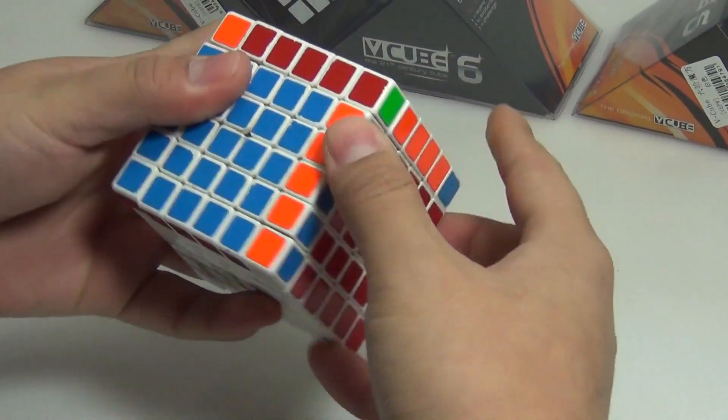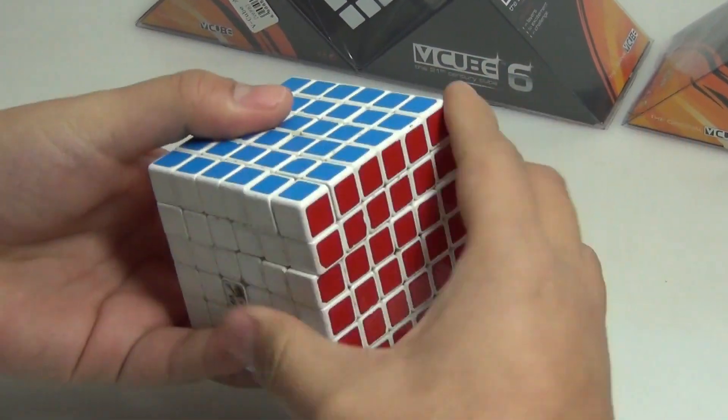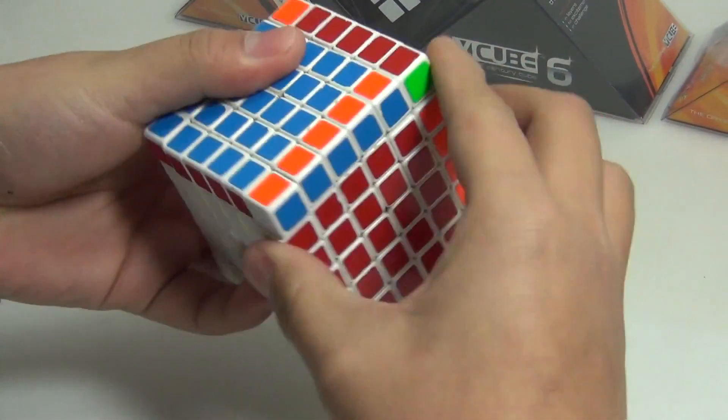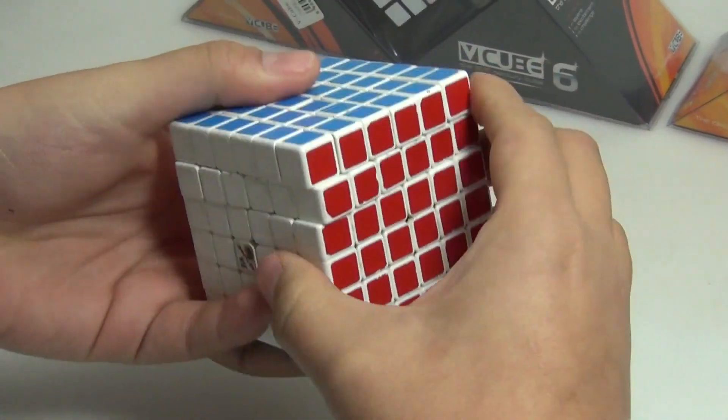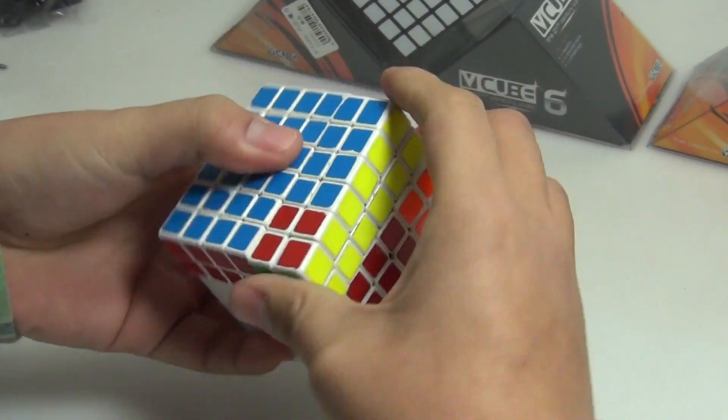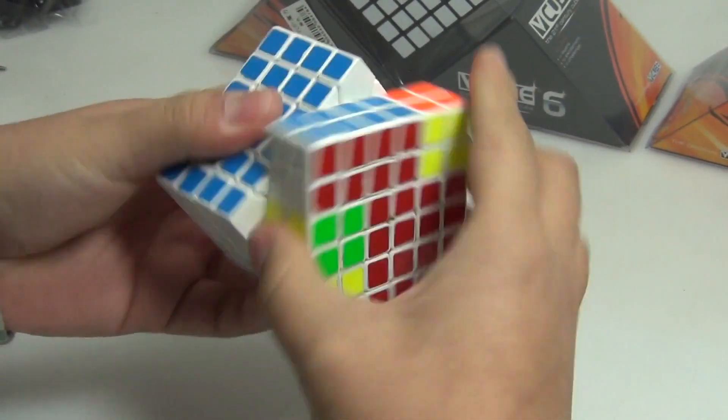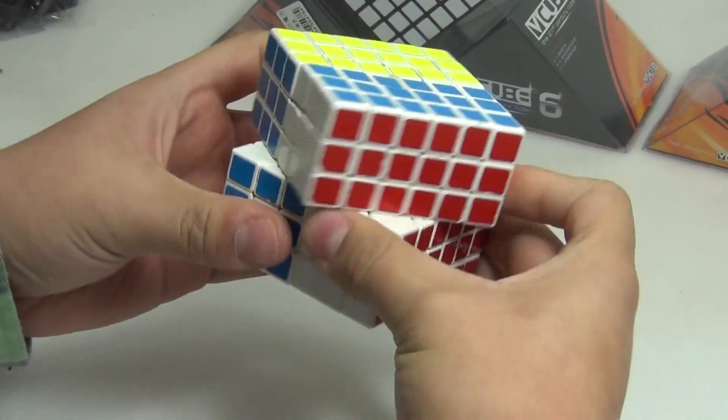As we can see, this cube is very smooth, no matter the outer layer, the second layer, or the middle layer.